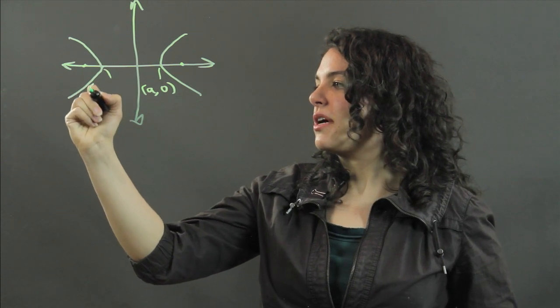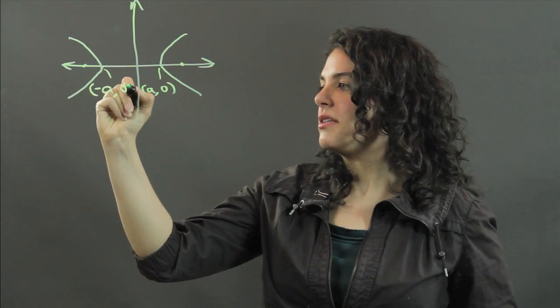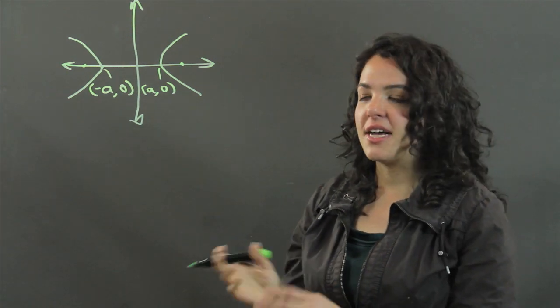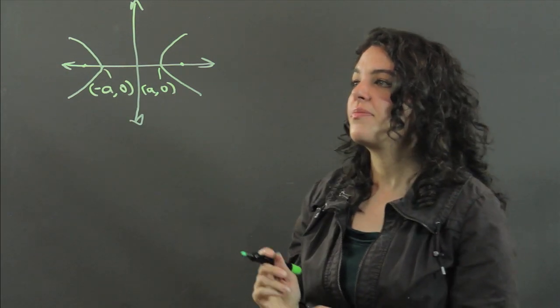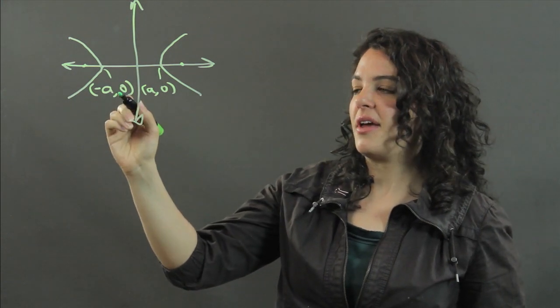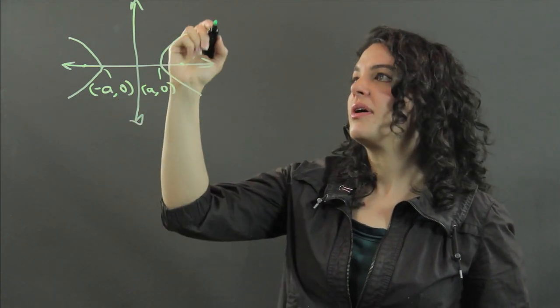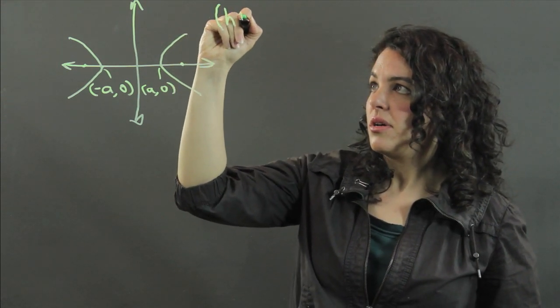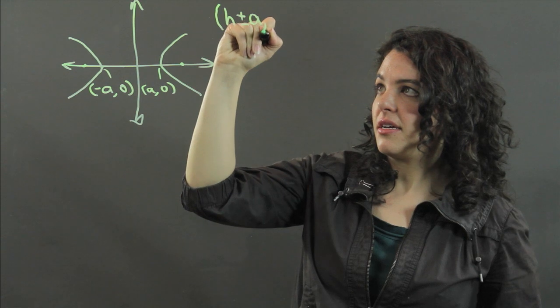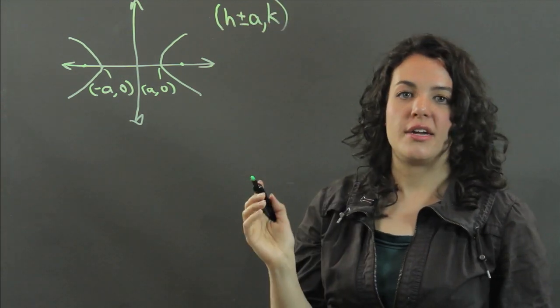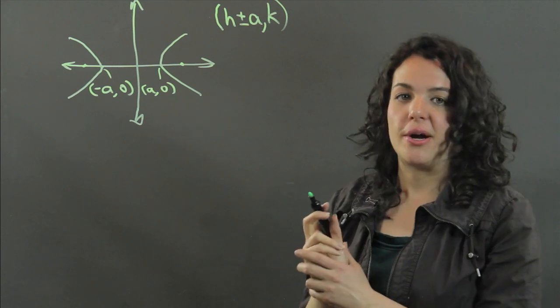And this vertex is negative a0. If you have a hyperbola that's not centered at the origin, then the vertices can be found at not negative a0 and a0, but we would say h plus or minus a, k, where h,k is the center of our hyperbola.